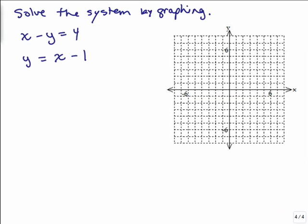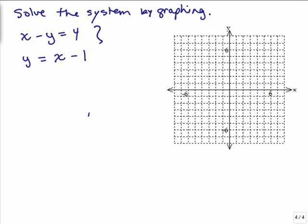Okay, here's another problem. Solve the system by graphing, and we have two equations: x minus y is 4, and x equals y minus 1.